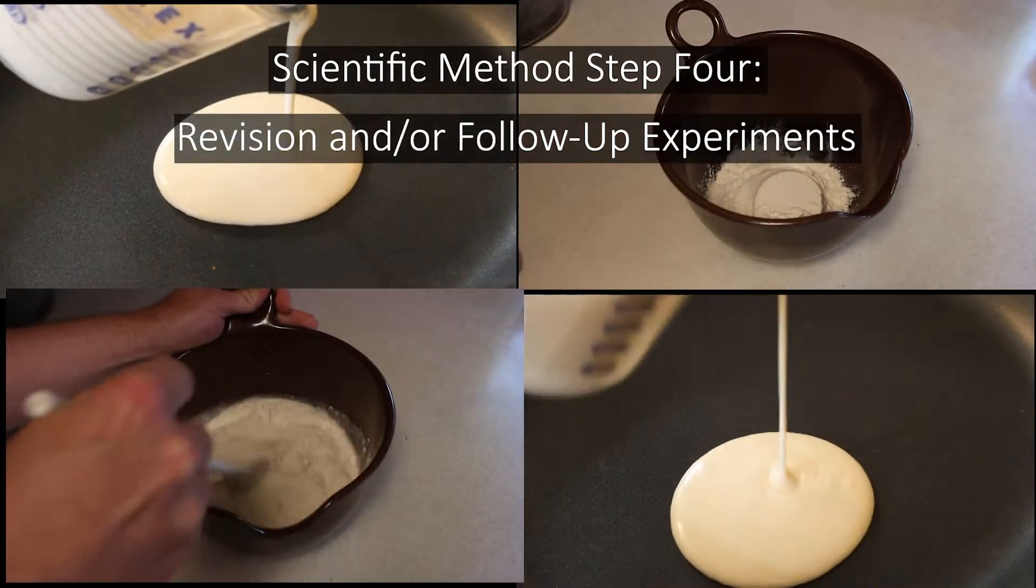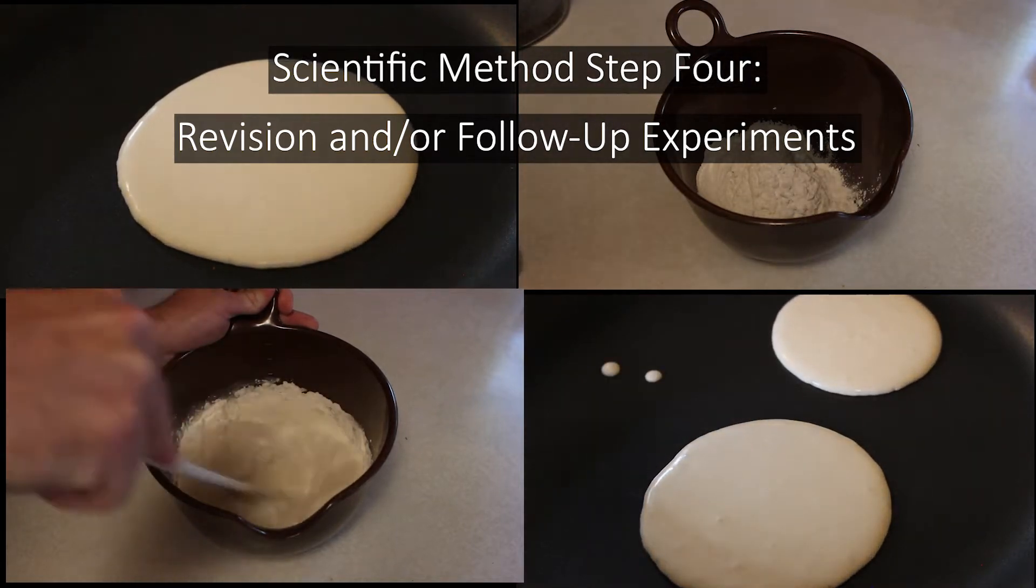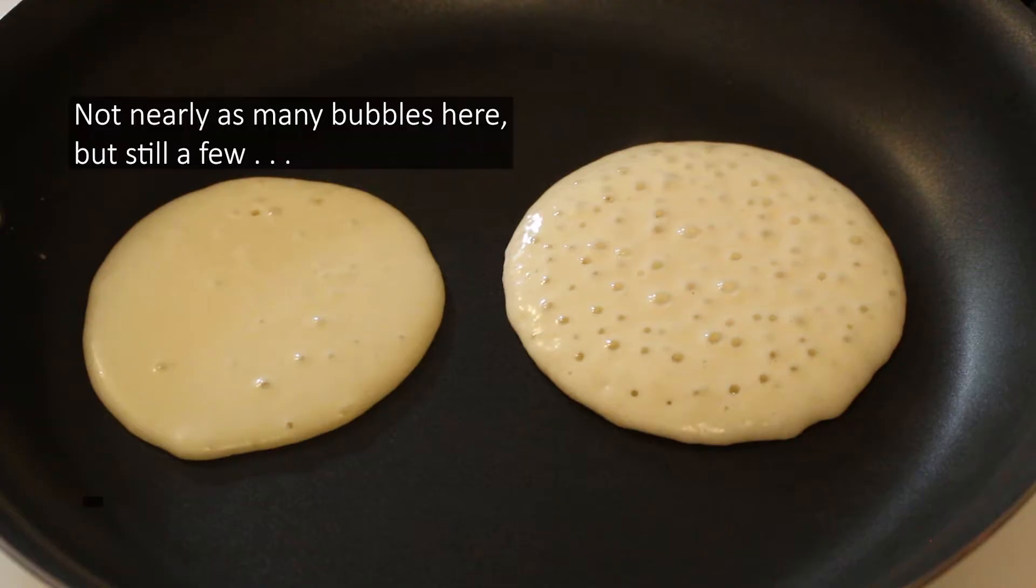And finally, depending on what your experimental results tell you, you may have to revise your hypothesis and or perform follow-up experiments. In our example, if we had still got bubbles in our pancakes, we could take another look at the ingredients and see if there was something else in there we could omit.